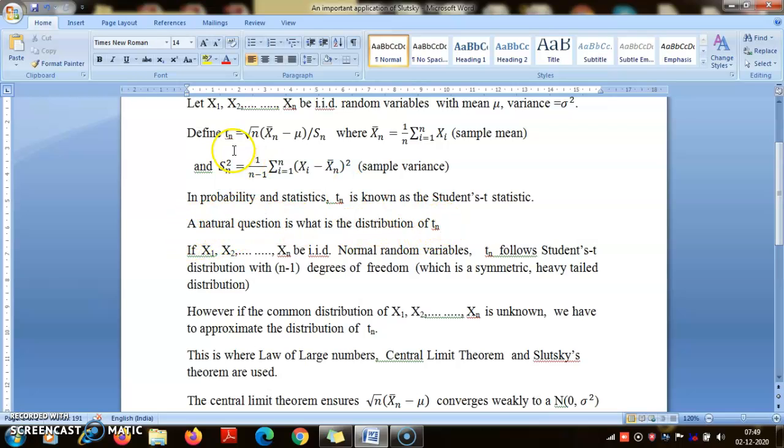A natural question is what is the distribution of Tn. So here is this result: if X1, X2, Xn are i.i.d. normal, then Tn follows Student's t distribution with n-1 degrees of freedom.